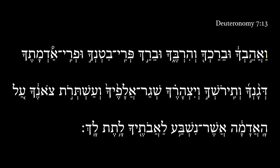Deuteronomy 7:13. So back at the top here, we've got a long one. And he will love you — here we have the qal perfect 3MS of the root ahav with a 2MS suffix: and he will love you.